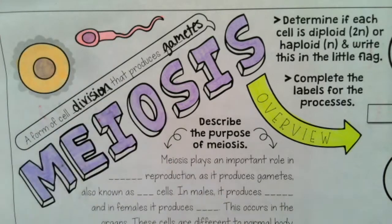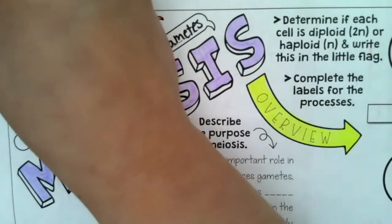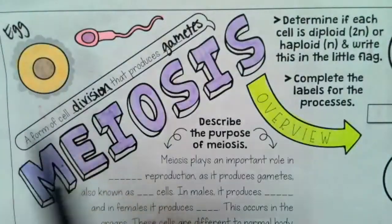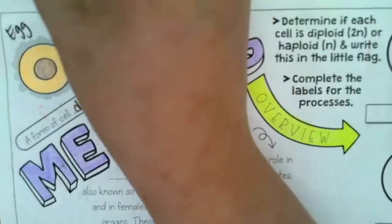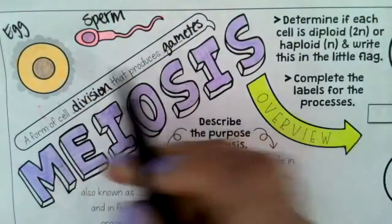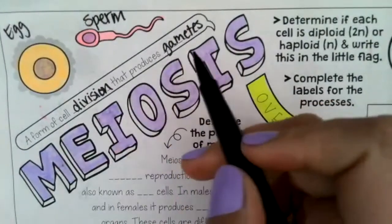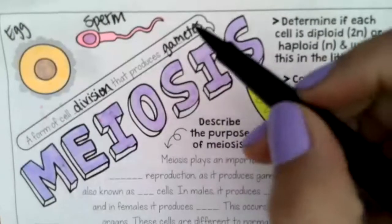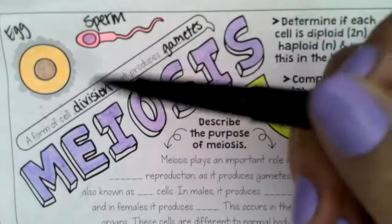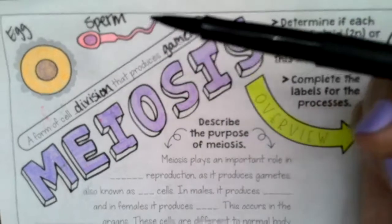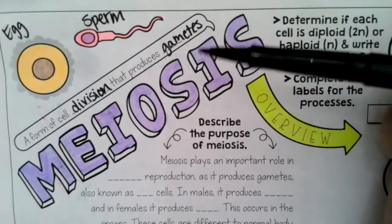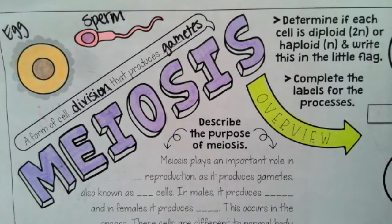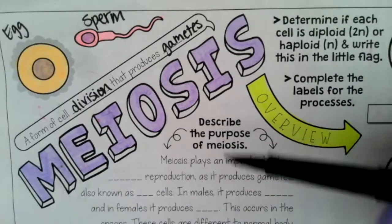So what the heck even is a gamete? If you guys look up here in the top left corner, you're going to see what we call an egg cell and a sperm cell. Both of these things are what we call gametes. Our egg and sperm cells are human gametes — that's what we call them.